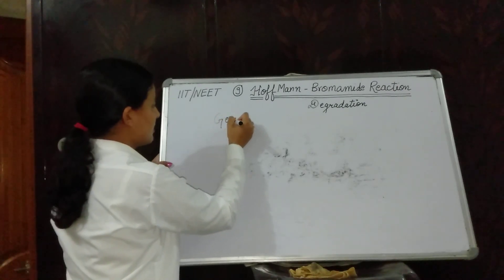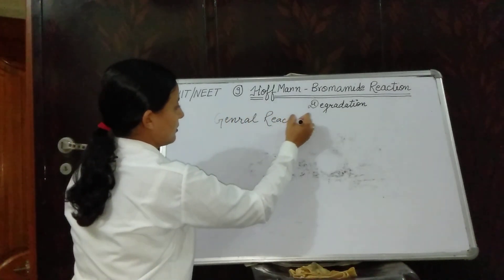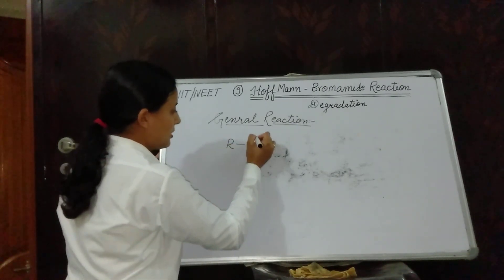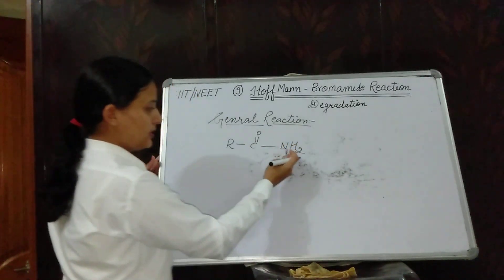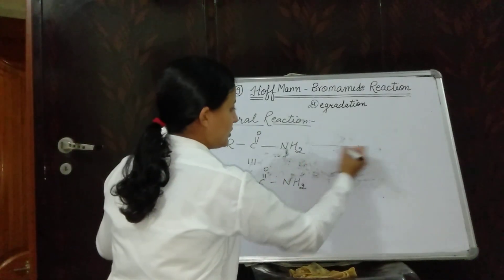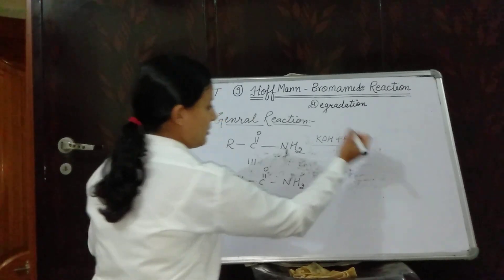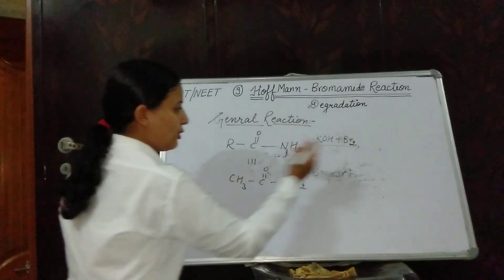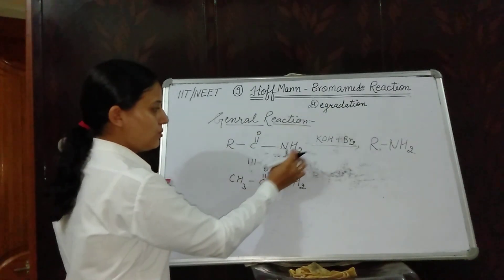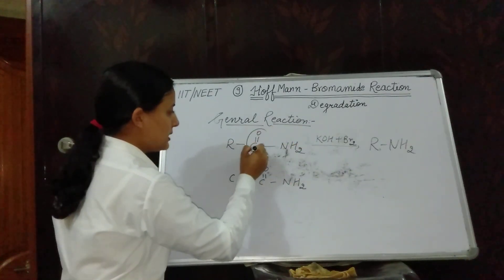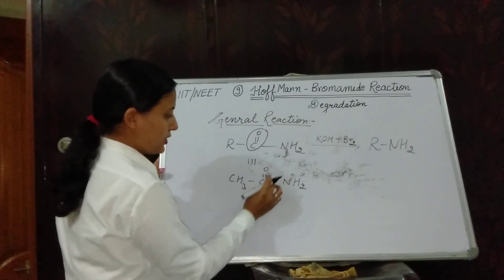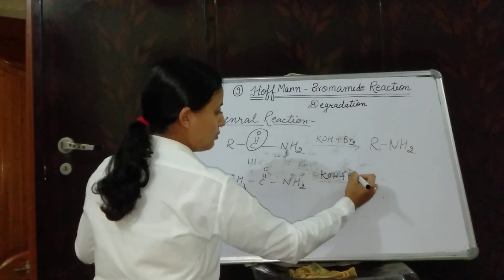Now we see the general reaction. We have seen in our main points that we must take unsubstituted amide. For example, taking CH₃-CO-NH₂ (methanamide) in the presence of KOH and bromine — what will be formed? The product molecule is an alkyl amine: R-NH₂. That means if you have R-CO-NH₂ in presence of Br₂ and KOH, you remove the carbonyl group and write the substituent groups in your product. So CH₃-CO-NH₂ gives CH₃-NH₂.